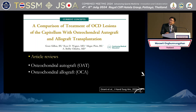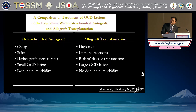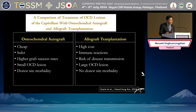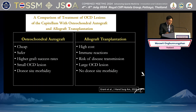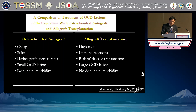Comparing autograft and allograft osteochondral transplantation — there are pros and cons to each procedure. Autograft achieves safe, known immunogenicity and a higher rate of graft incorporation, and remains effective for smaller lesions, but has reported donor-site morbidity. Allograft transplantation is higher cost due to insurance coverage issues and the cost of the allograft itself. However, there is less risk of immune reaction and disease transmission. Osteochondral allograft has shown positive outcomes in large lesions, with the advantage of eliminating donor-site morbidity.